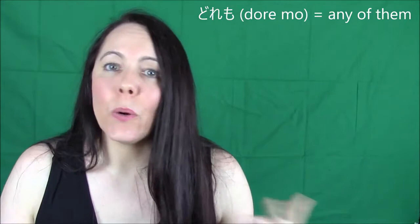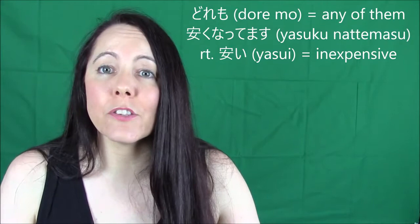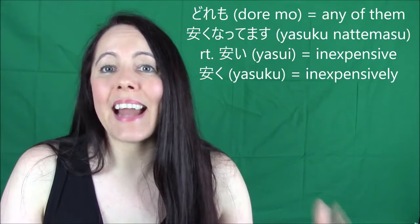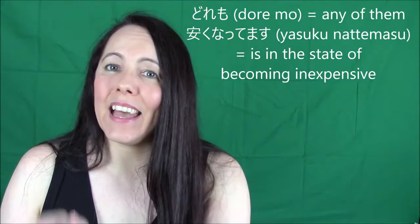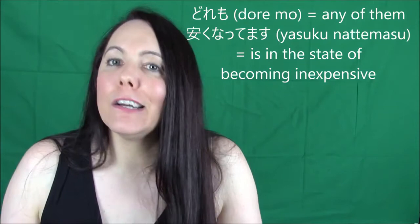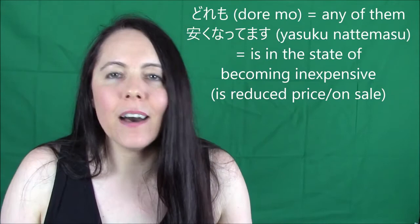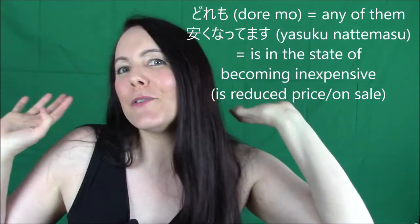Mom says 'saa, irasshaimase' — 'saa' means 'come on,' and 'irasshaimase' is the shopkeeper call. 'Dore mo' means any, all, or everyone. 'Yasuku natte masu' — 'yasuku' comes from 'yasui,' meaning inexpensive or cheap. 'Yasku naru' means to become cheap, and 'yasuku natte masu' means it is becoming cheap. In natural English we'd say 'everything's going cheap,' 'everything has been reduced,' or 'all items must go' — that's the feel of it. Then Morga — the monster of the day — is revealed: Naru's mom is actually possessed by Morga.